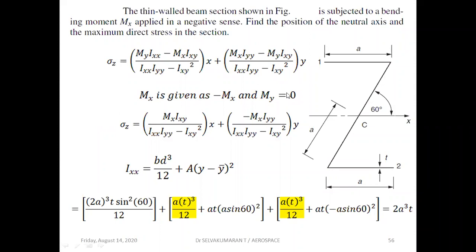The thin-walled beam section shown in the figure is subjected to a bending moment Mx applied in a negative sense. Find the position of the neutral axis and the maximum direct stress in this section. The sigma_z expression is shown here — Mx is given as minus Mx and My is zero, so substitute these two to get the final expression for sigma_z.